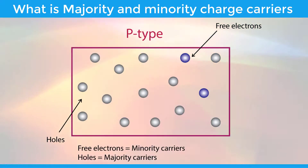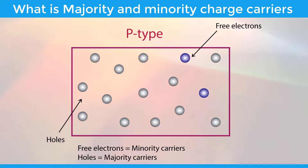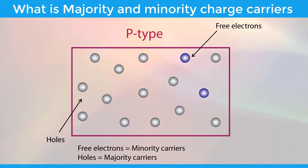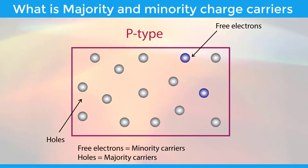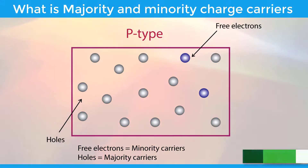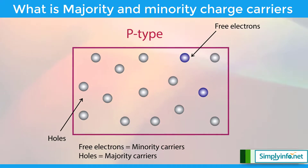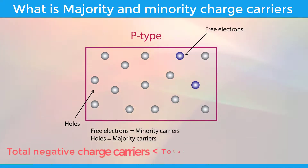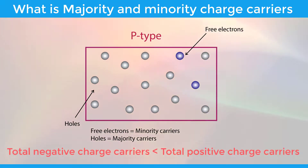In P-type semiconductor, a very small number of free electrons is present. Hence, free electrons are the minority charge carriers in the P-type semiconductor, and they carry only a small amount of electric current. The total number of negative charge carriers (free electrons) in P-type semiconductor is less than the total number of positive charge carriers (holes). So, total negative charge carriers is lesser than total positive charge carriers.